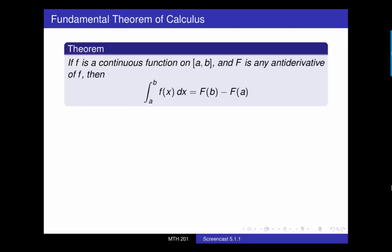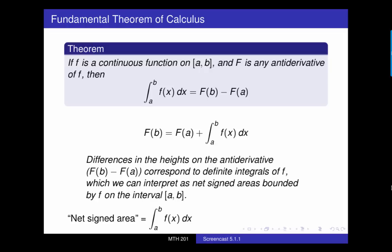We can rewrite the fundamental theorem like this, and it tells us something about the way the height values of the antiderivative big F change. Those height differences let us construct a more accurate graph of little f.